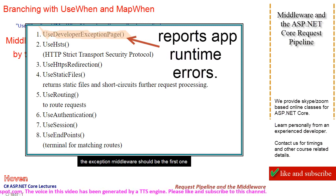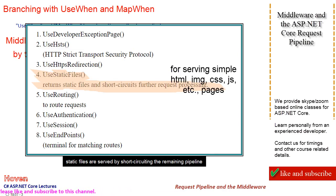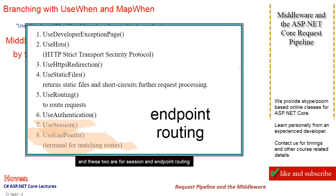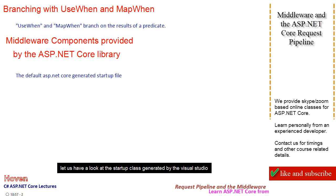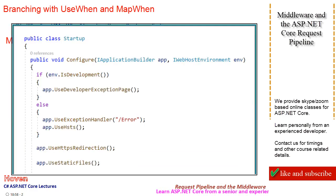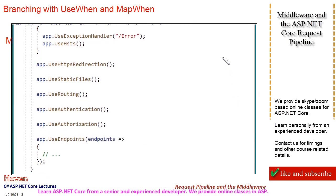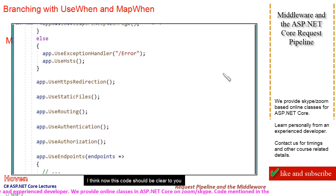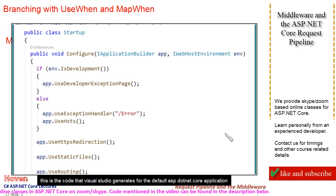The exception middleware should be the first one. HSTS and HTTPS redirection are protocol-related components. Static files are served by short-circuiting the remaining pipeline. These are for routing and authentication, and these two are for session and endpoint routing. Later we shall discuss what endpoint routing is. Let us have a look at the startup class generated by Visual Studio. I think now this code should be clear to you — this is the code that Visual Studio generates for the default ASP.NET Core application.